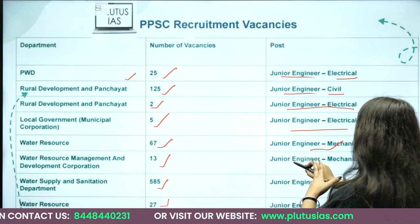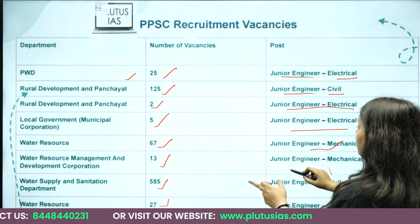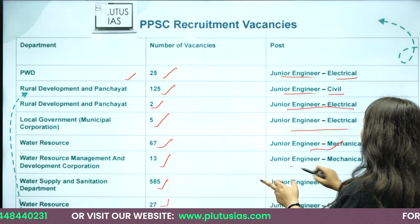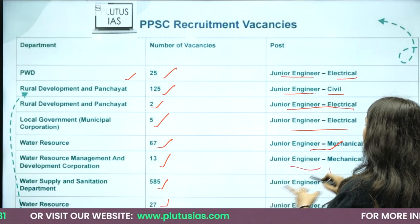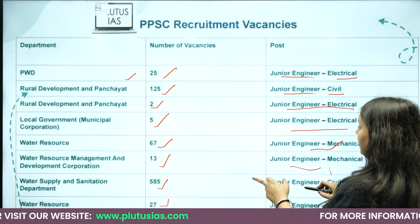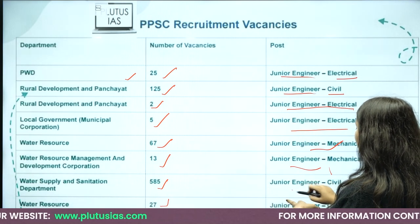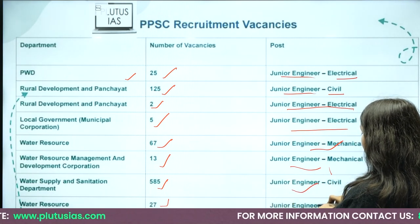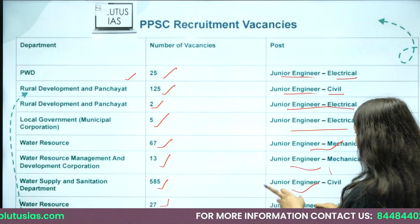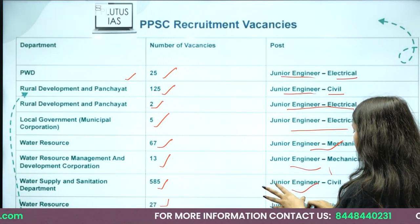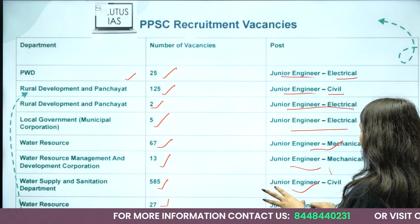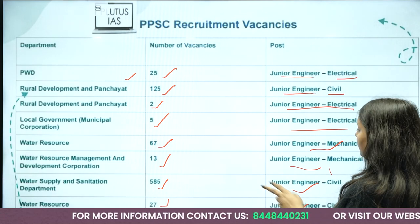There are 27 posts for Junior Engineer Mechanical. For Junior Engineer Mechanical there are 67 seats, for Junior Engineer Civil there are 585 seats, and additionally 27 seats for Junior Engineer Civil.